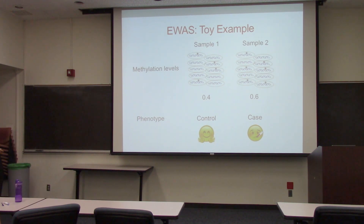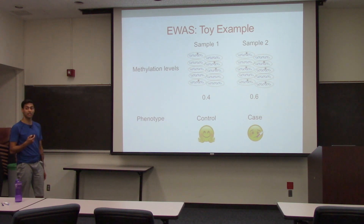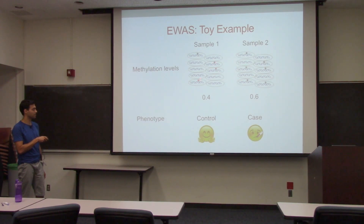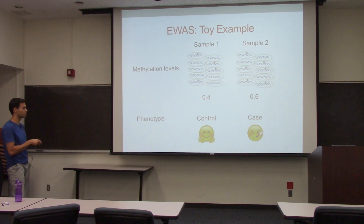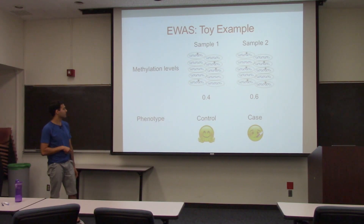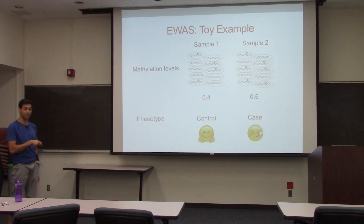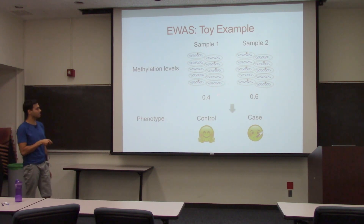A toy example: assume we collect EWAS data from two samples. For sample one, we have 10 different cells and look at a specific position in the genome — the methylation level, the fraction of methylated cells, is 0.4. For sample two, we have six methylated out of 10 cells, so it's 0.6. We're also collecting some phenotype — for example, some disease. Sample one is control and sample two is a case. So in this example, an increase in your methylation level can increase the risk of getting the disease.